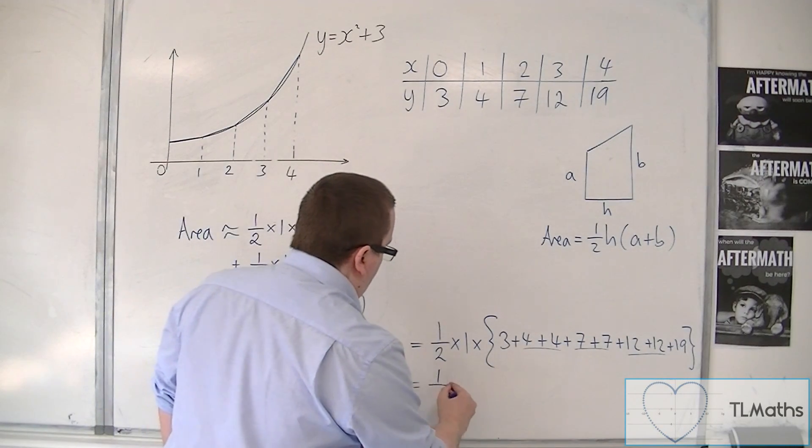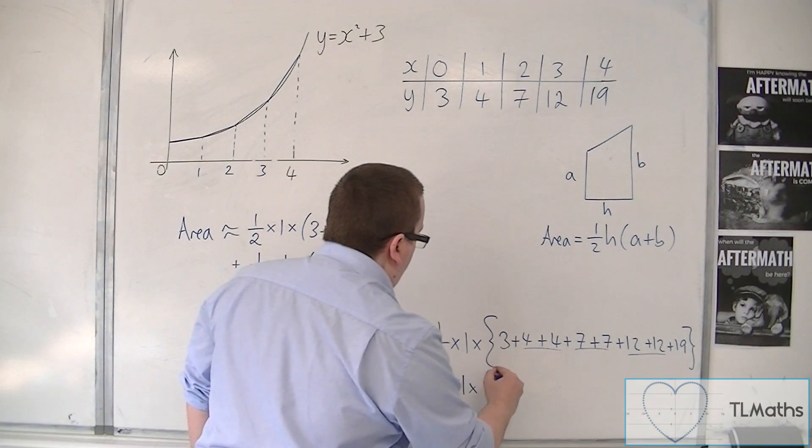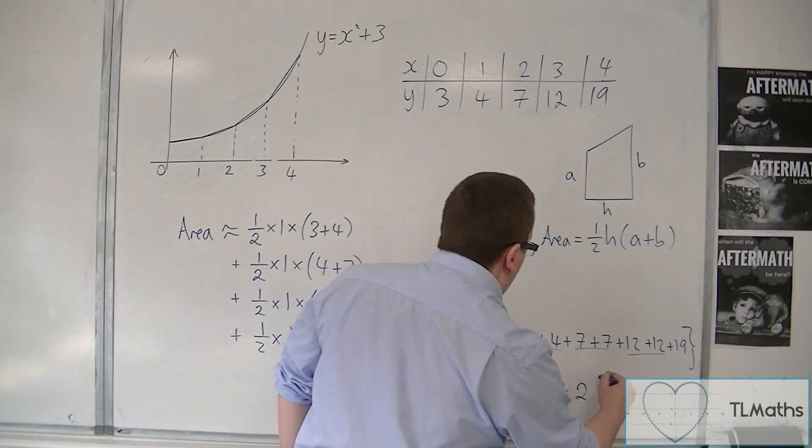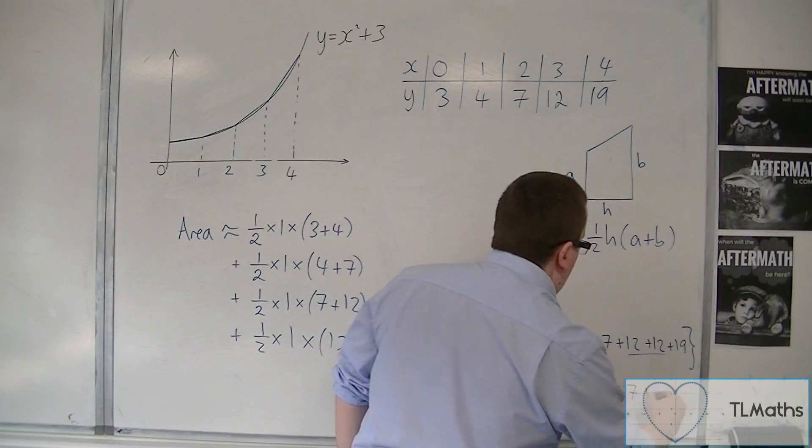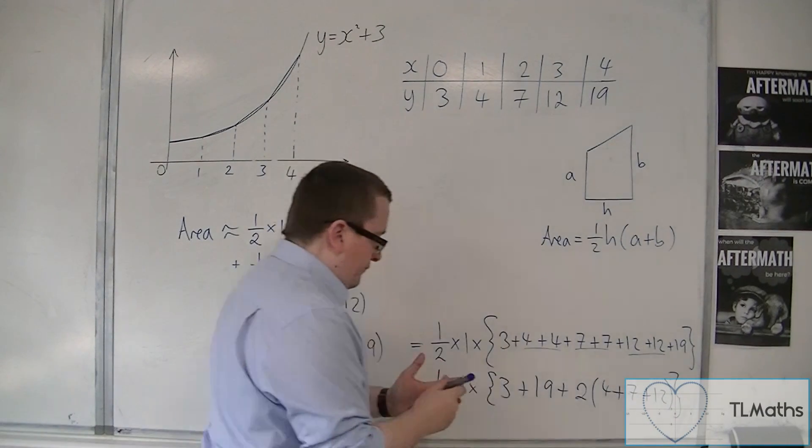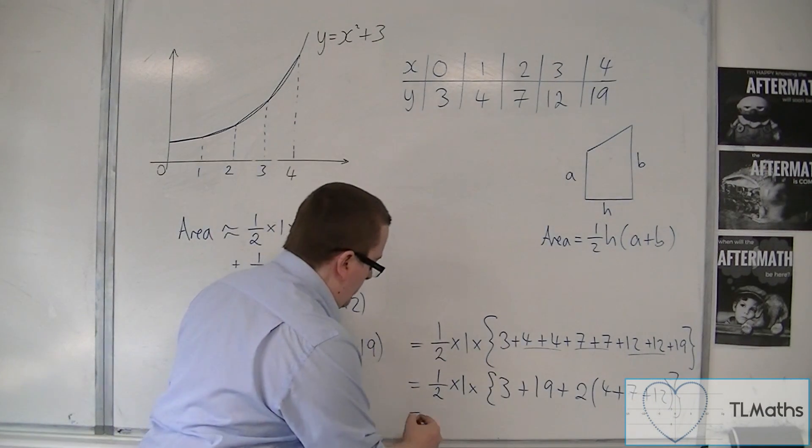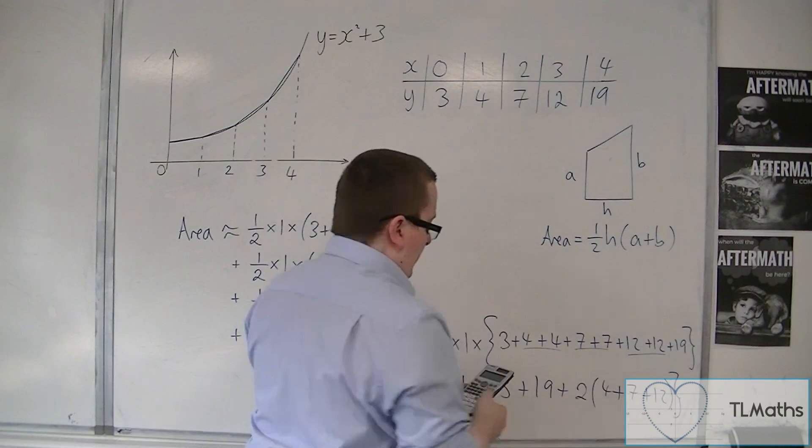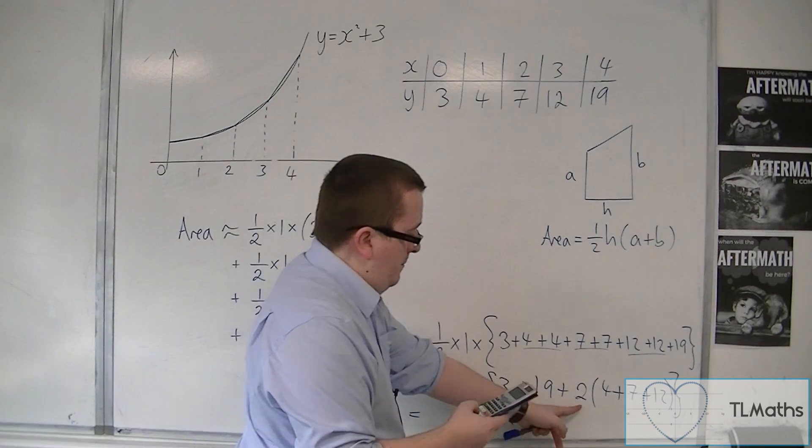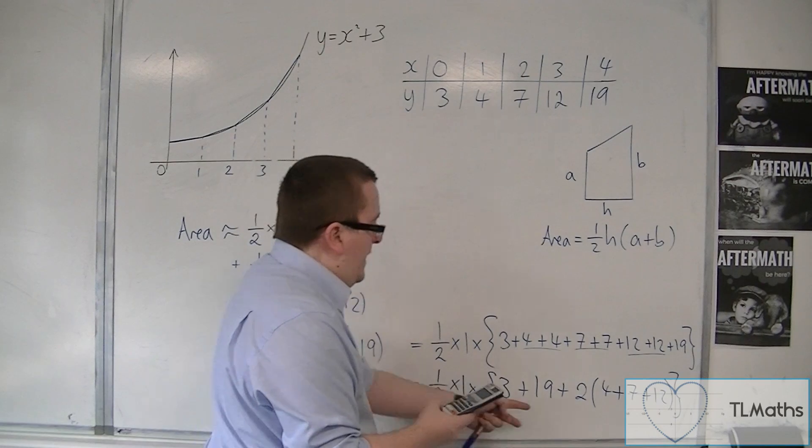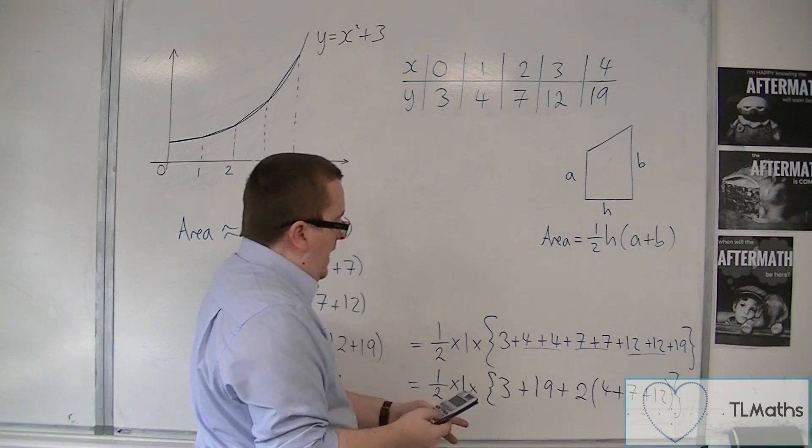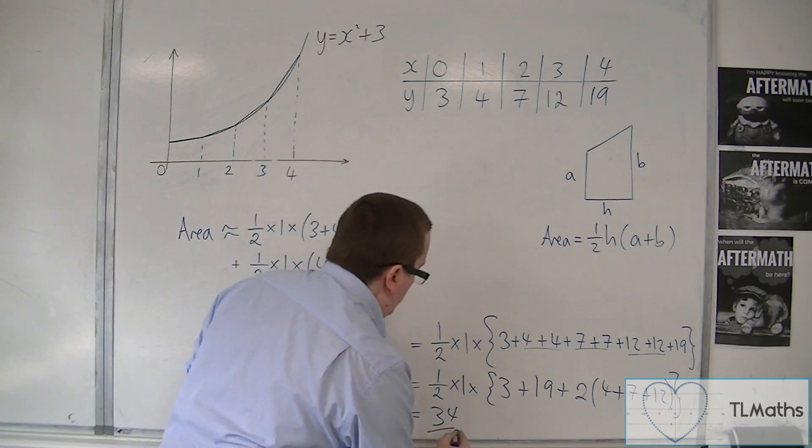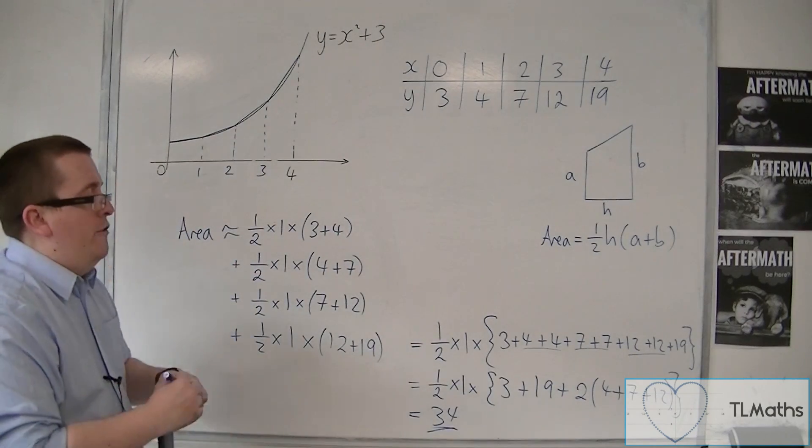So what I could do is I could write that as 1 half times 1 times the first plus the last plus 2 lots of the rest. So 4 plus 7 plus 12. So I could then pop that into my calculator. So starting with a 4 plus 7 plus 12, and then times it by 2, and then adding the 19 and the 3, and then halving it. And I get 34. So the approximate area is 34 units.